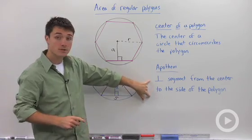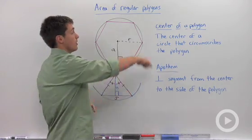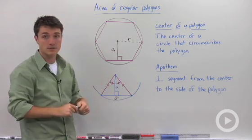Now an apothem is a perpendicular segment from the center of the circumscribed circle to one of the sides of your polygon.